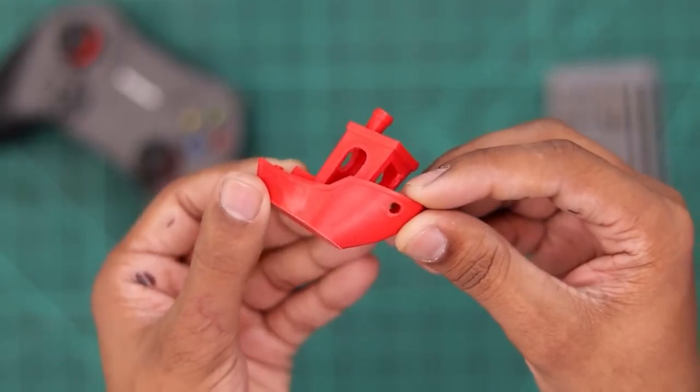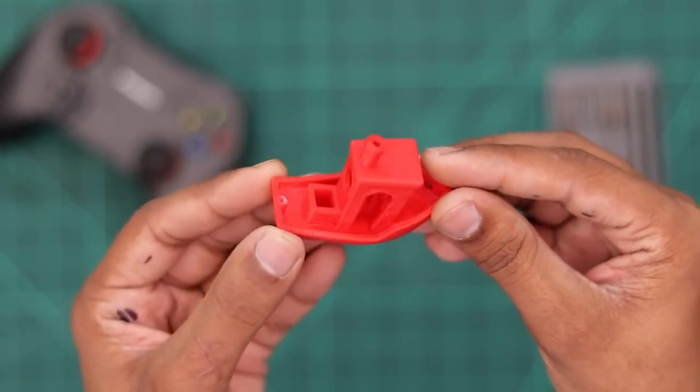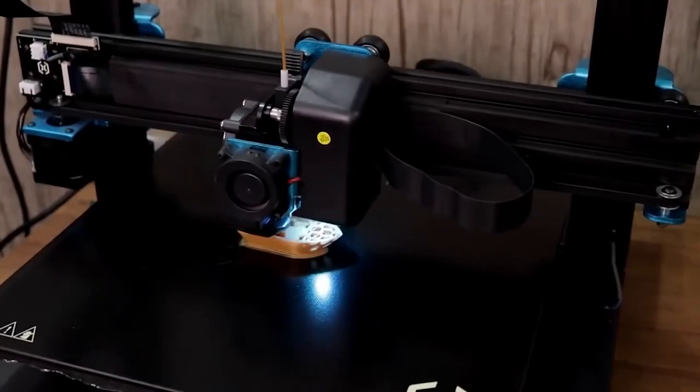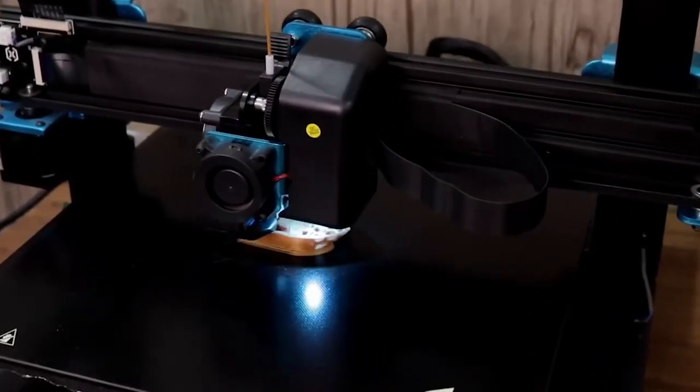But somehow I remove the material and here is the final result, it looks very good but I'm not satisfied. So I again print the same model by changing the filament and some settings in the slicer software.